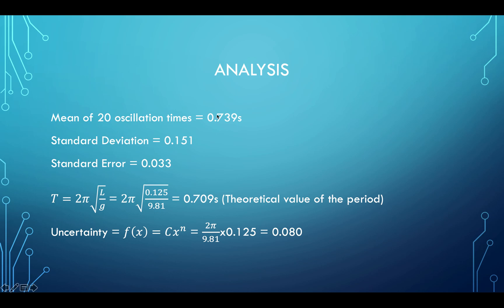After analyzing the data, our mean came out to be 0.739 seconds. Our standard deviation was 0.151. Our standard error was 0.033. Our theoretical period was 0.709, which is actually very close to the actual value. The uncertainty of one of the periods was calculated as 0.08, which was slightly different from the standard error, and we will talk about that.